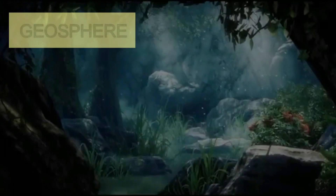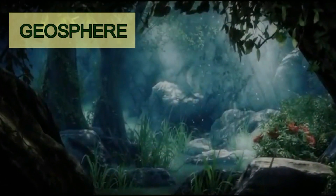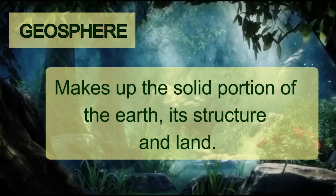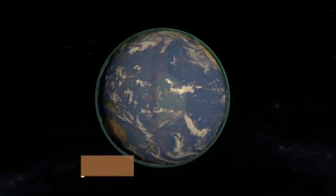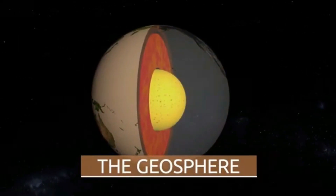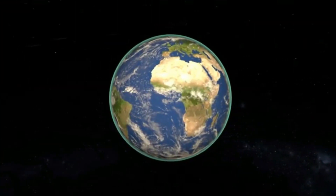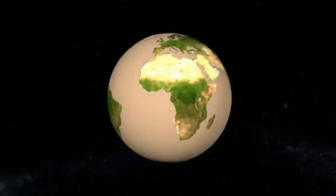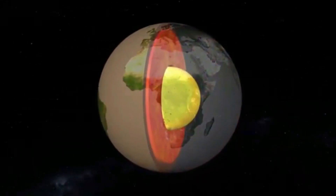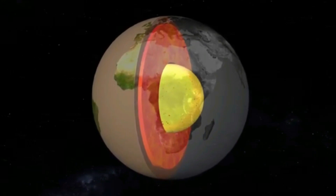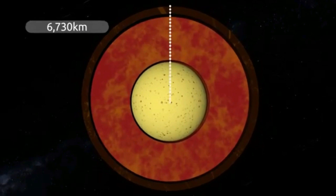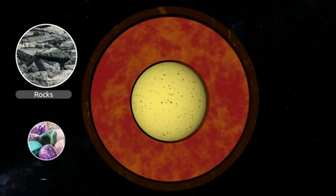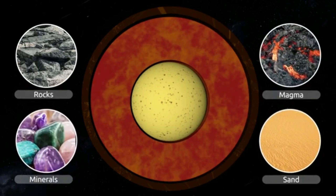Now let's talk about the last subsystem of the Earth — the geosphere. Geosphere refers to the solid portion of the Earth, which includes our structure and our land. The geosphere includes everything natural that makes up the surface of the Earth: all the rocks and soil particles from dry land to those found at the bottom of the ocean. It also includes mountains, minerals, lava, and molten magma from beneath the Earth's crust.